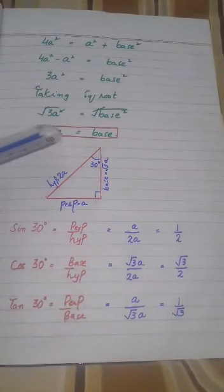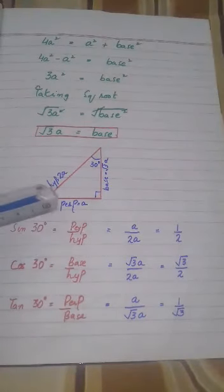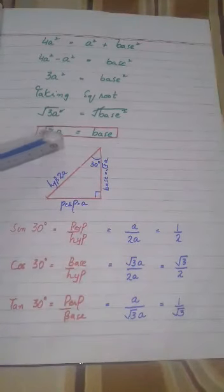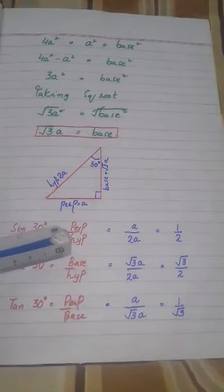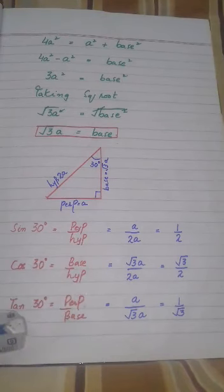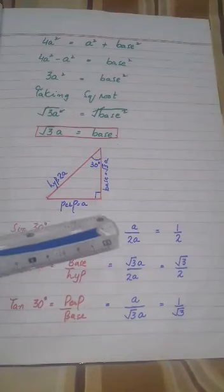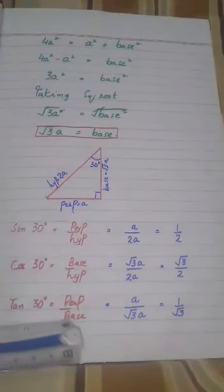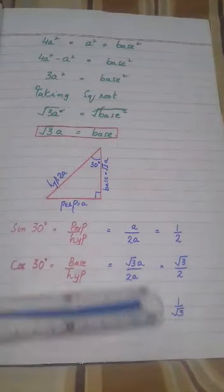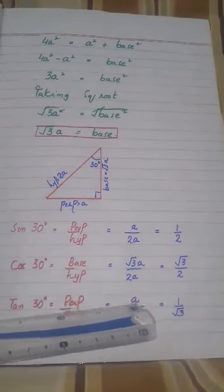The value of base is √3a. We have now completed all three sides of this right angle triangle: perpendicular = a, hypotenuse = 2a, and base = √3a. Now we can find the ratios. Sin theta equals perpendicular upon hypotenuse = a upon 2a. Cos theta equals base upon hypotenuse = √3a upon 2a. Tangent theta equals perpendicular upon base = a upon √3a. Cancelling a in each: sin 30 = 1/2, cos 30 = √3/2, tan 30 = 1/√3.